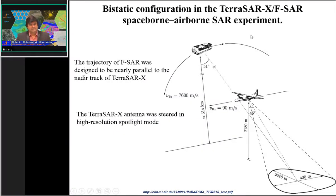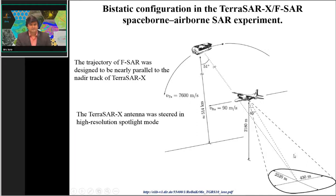Before the launch of TerraSAR-X, German scientists conducted several experiments, including a hybrid configuration in bistatic SAR mode. TerraSAR-X was operated in spotlight mode to transmit electromagnetic pulses for a specific location, while another sensor working as a receiver was placed on an aircraft operating in stripmap mode to receive all signals transmitted in spotlight mode. After scattering, the receiver captured the transmitted information and images were generated.